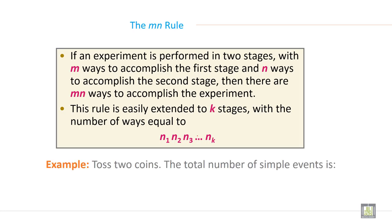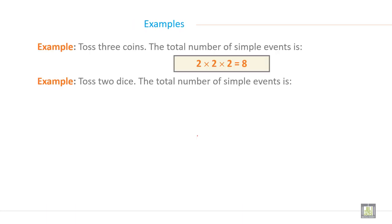Example: toss 2 coins. The total number of simple events is 2 × 2 × 2 × 2, which is equal to 8.